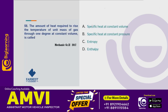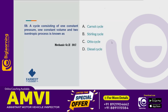The amount of heat required to raise the temperature of a unit mass of gas by 1 degree at constant volume is called Cv — the specific heat at constant volume. This is from a Windham Mechanic Grade 2 question. A cycle consisting of 1 constant pressure, 1 constant volume, and 2 isentropic processes is also discussed.